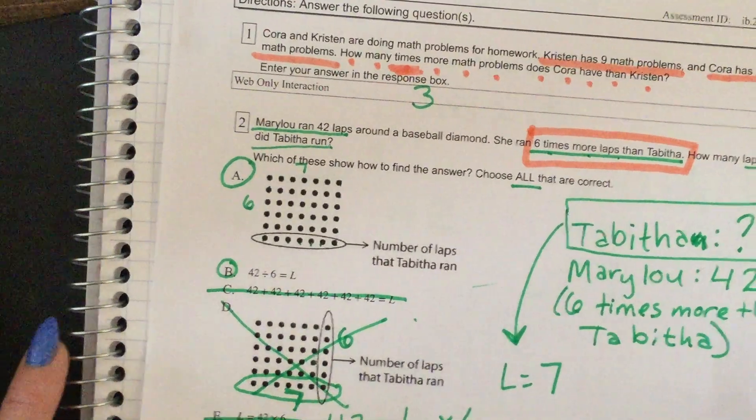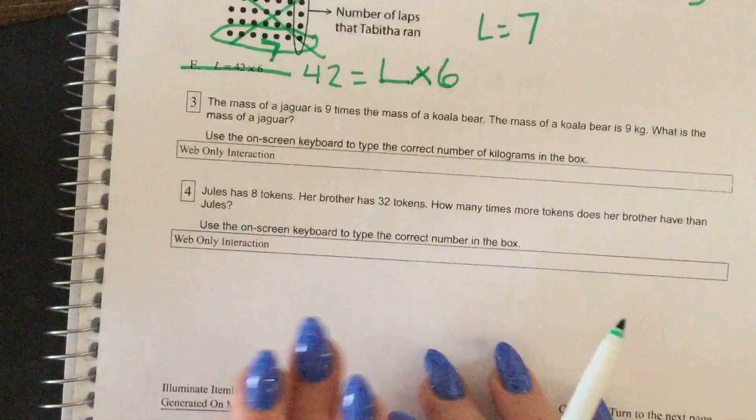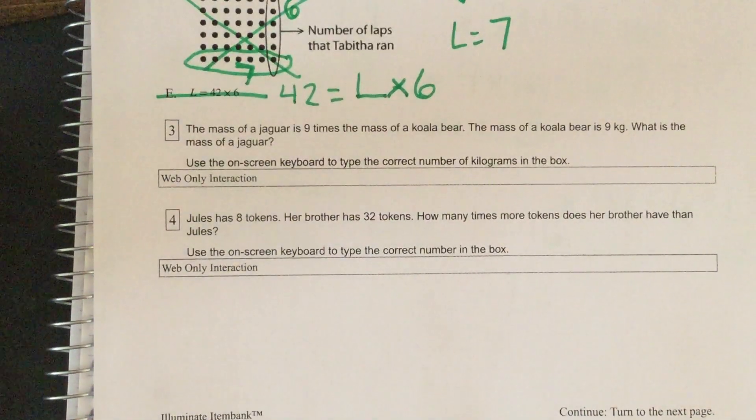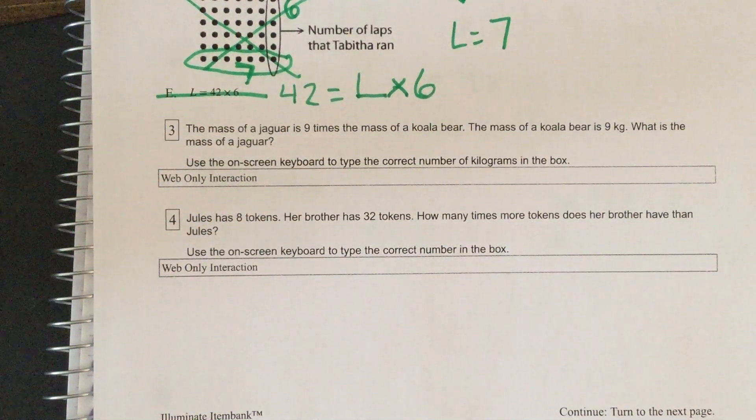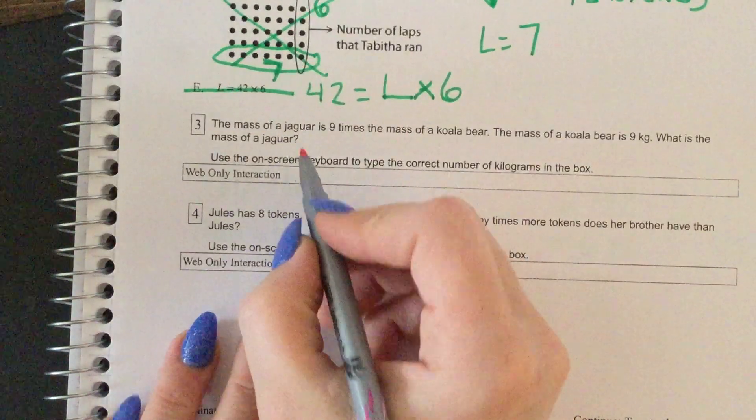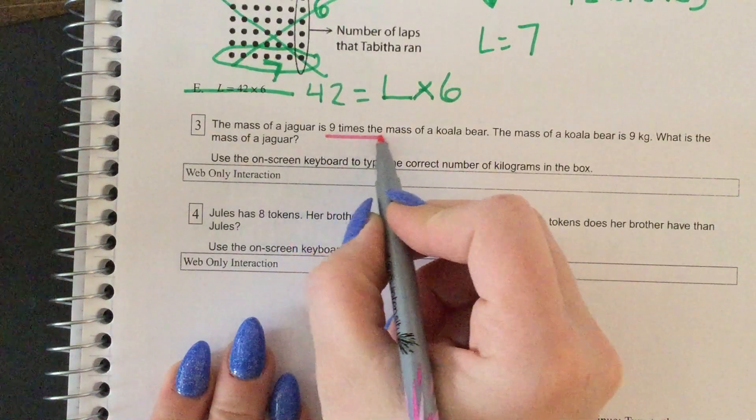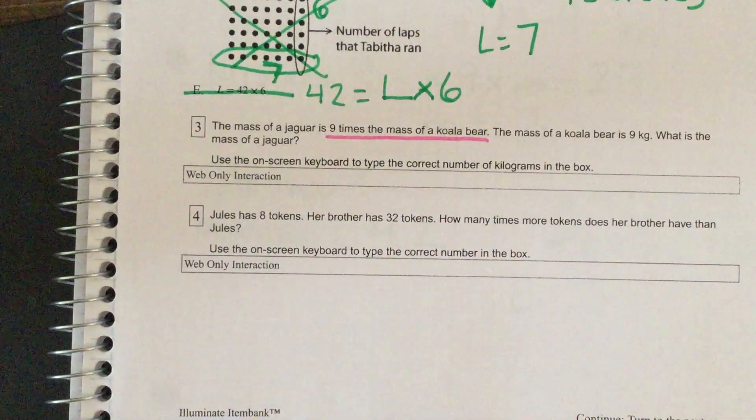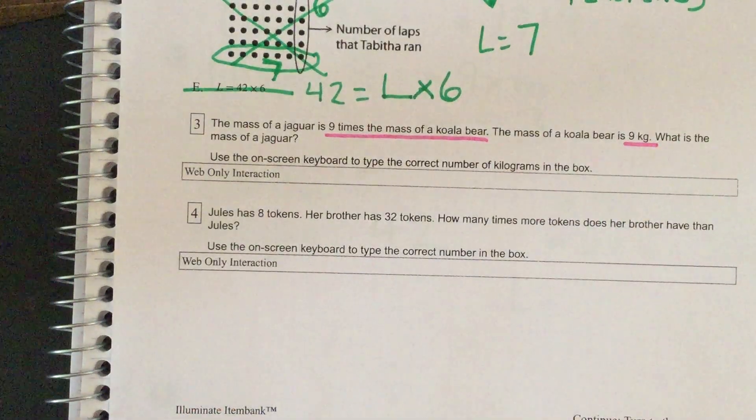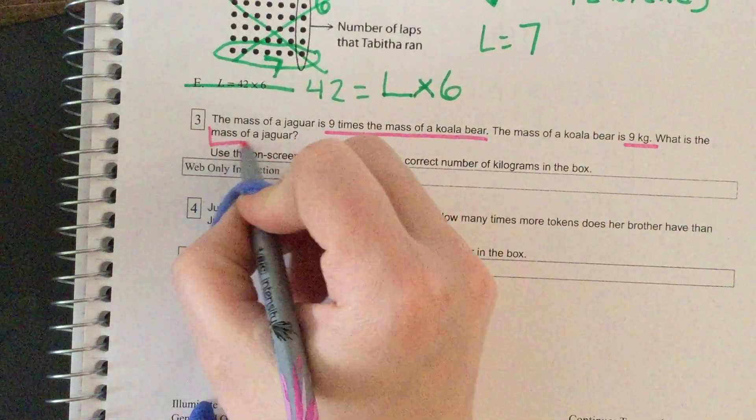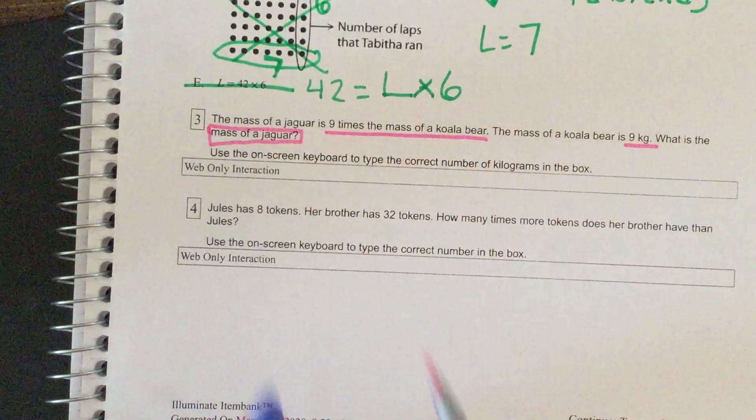All right, nice job friends. Let's go to number three. We know that the mass of a jaguar is nine times the mass of a koala bear. The mass of a koala bear is nine kilograms. What is the mass of a jaguar?